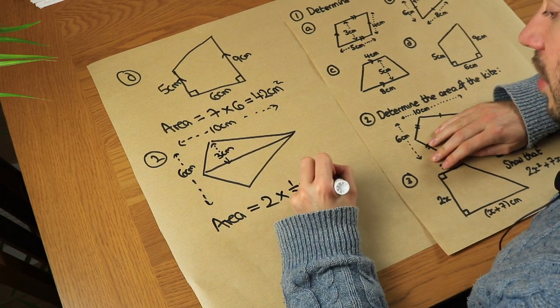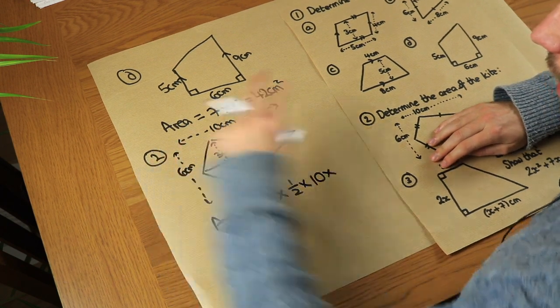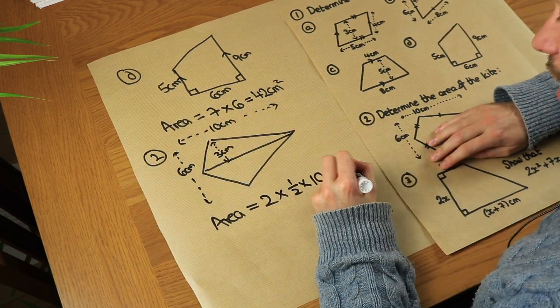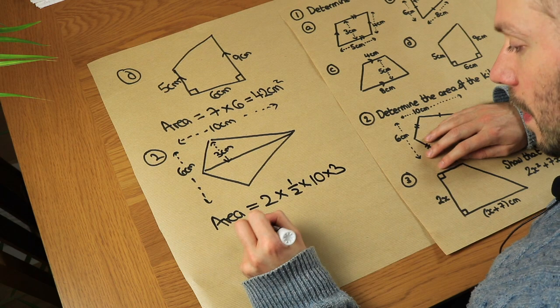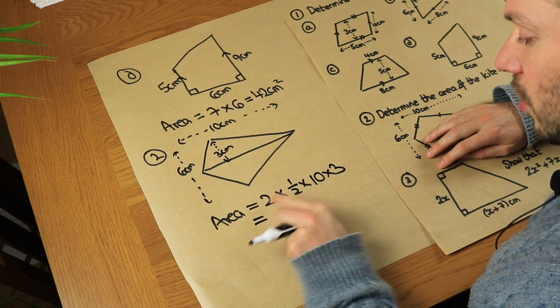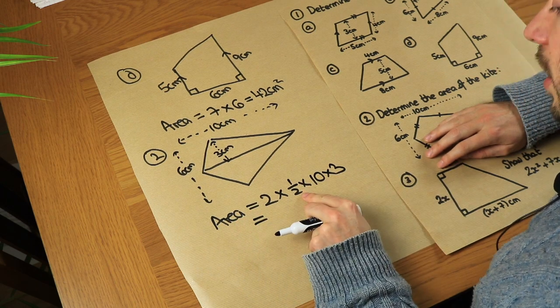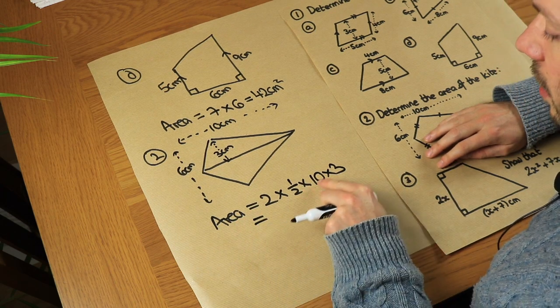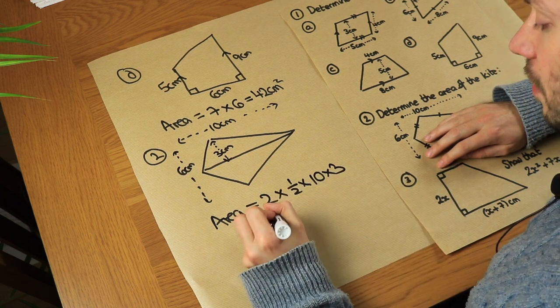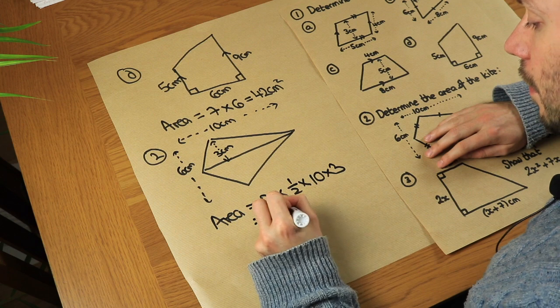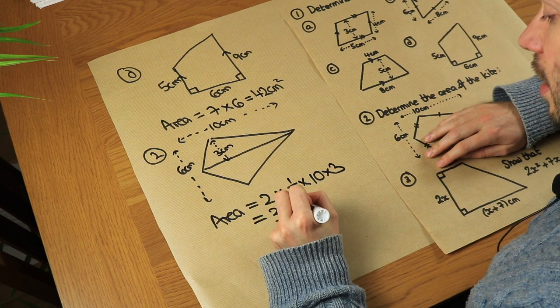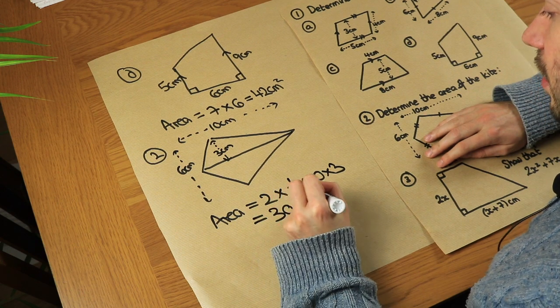Remember the area of a triangle is half times base times height. So it's half times base of ten times height of three. Two times half is one, and ten times three is 30. So the area is 30 centimetres squared.